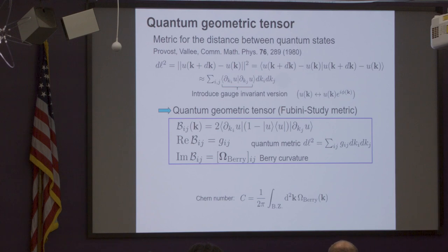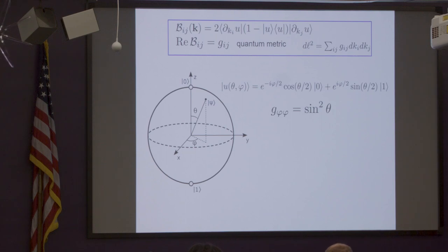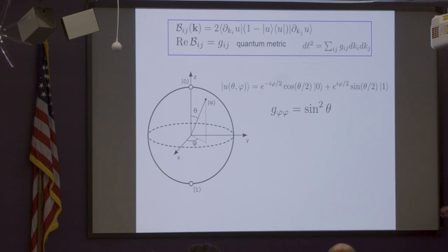In my opinion, if you want to understand something, try to have a two-by-two matrix example. So let's think that our Hilbert space consists only of two states, zero and one. Then you know this is the most general parameterization of a state in that space, and it can be visualized very nicely in the Bloch sphere. You can take this formula and calculate what the quantum metric is for instance for the parameter φ, and you end up with sin²(θ).